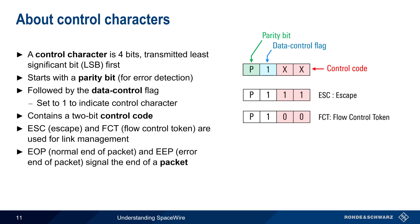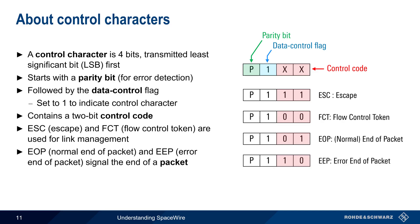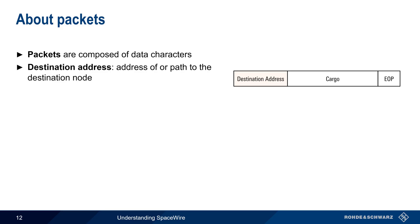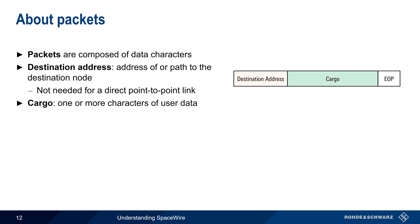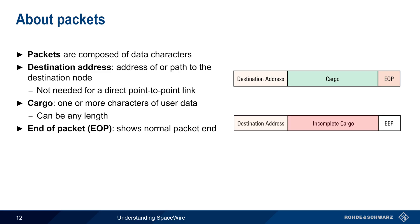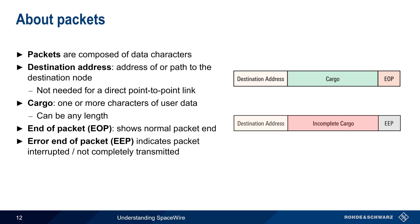The other two control characters are used to signal the end of a packet: the normal end of packet and the error end of packet. Packets are composed of data characters and may begin with a destination address, which is either the address of, or the path to, the destination node. Note that on direct point-to-point links between nodes, this field is not needed. The cargo field contains one or more characters of user data. This field can be of any length, and its contents are not defined by the standard. To indicate the end of a correctly transmitted packet, the end-of-packet character is appended to the cargo data. If the packet were interrupted or truncated during transmission, the error end-of-packet is used instead, indicating to the receiver that the cargo is incomplete and may be errored.